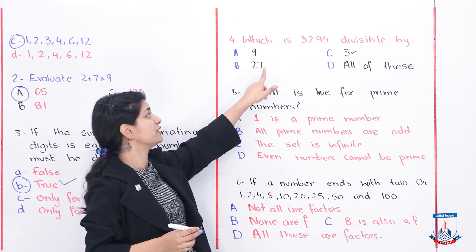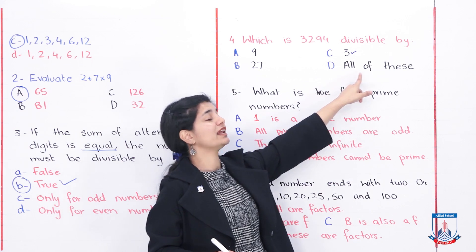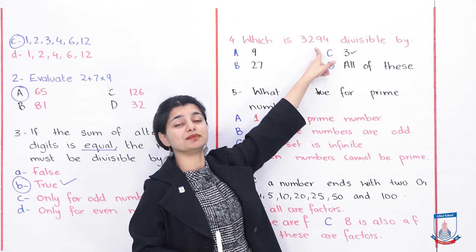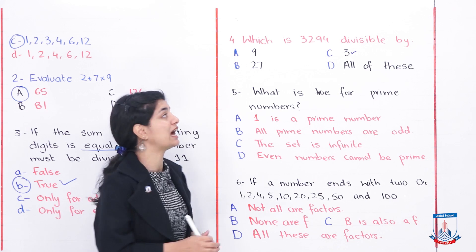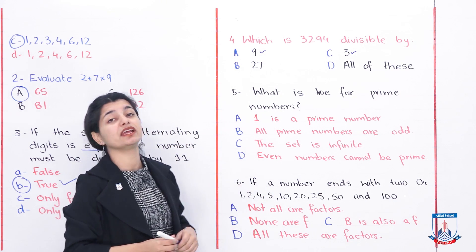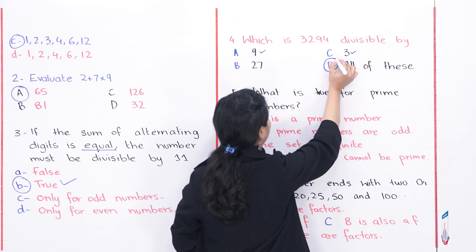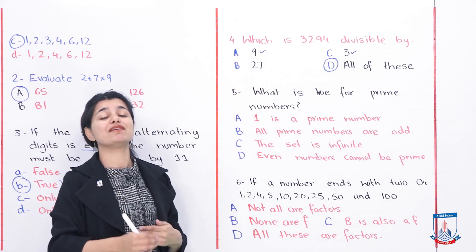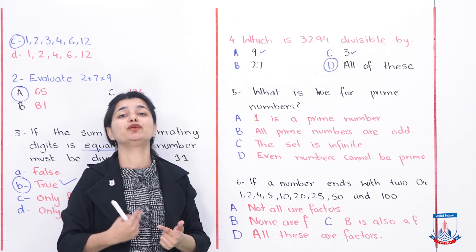Now checking divisibility by 9: the sum is still 18, and 18÷9=2, so yes, 3,294 is also divisible by 9. Since we have confirmed divisibility by both 3 and 9, we can say all of these options are correct. For 27, the divisibility rule requires the number to be divisible by both 9 and 3. Since both conditions are satisfied, 3,294 is also divisible by 27. So all options are correct.